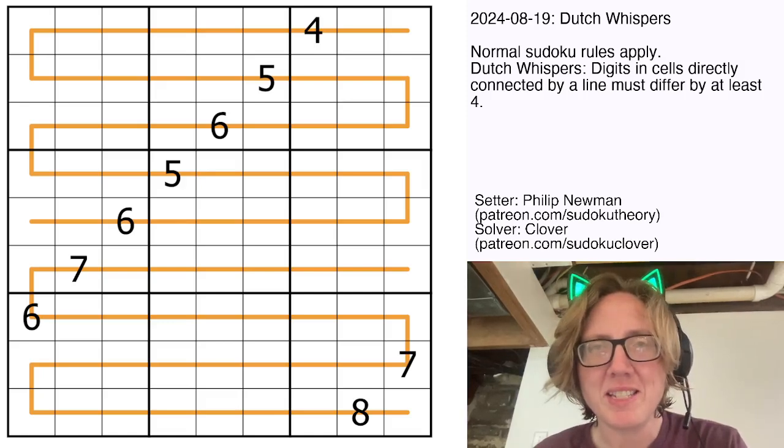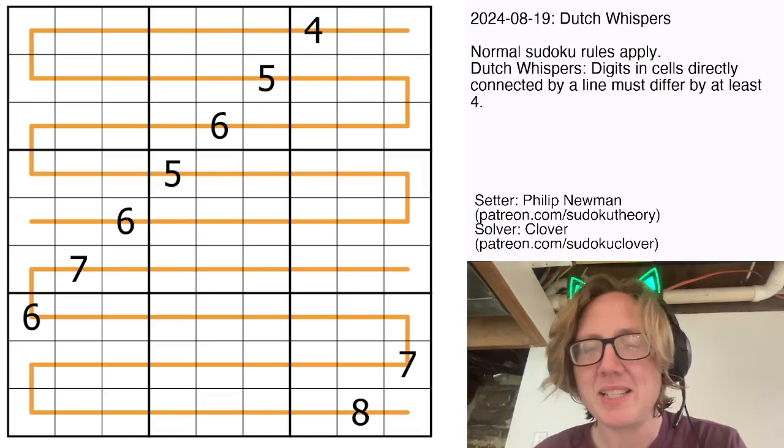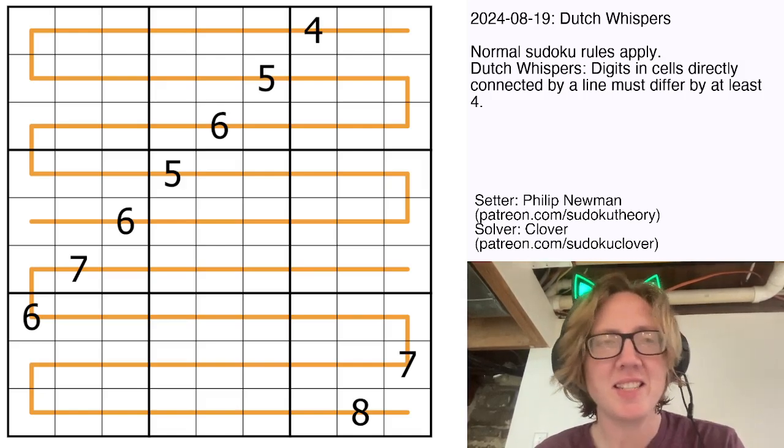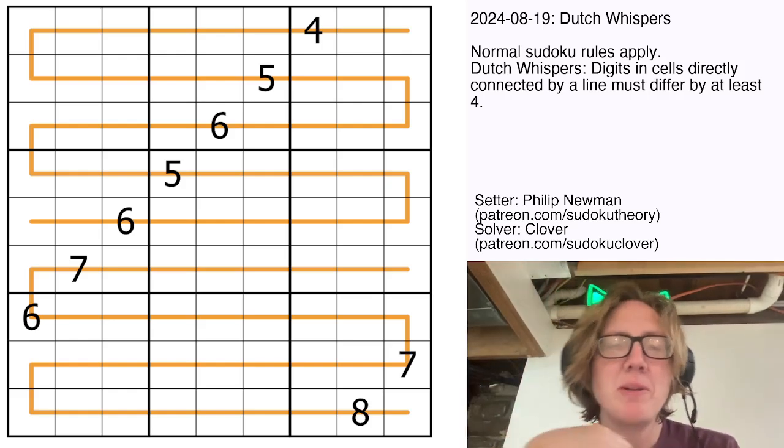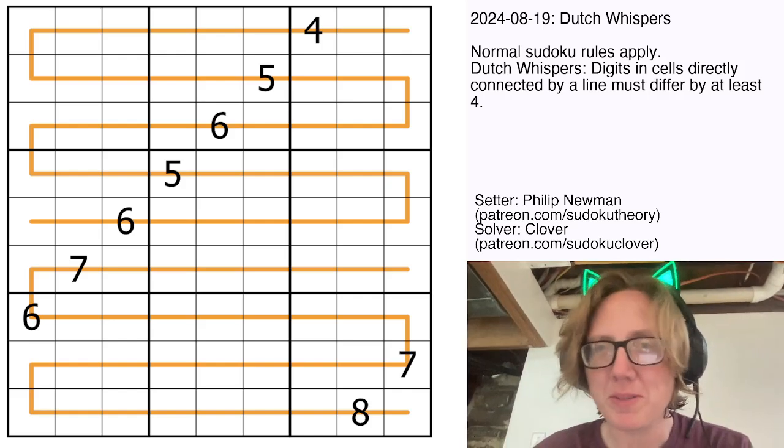Hello my friends, I'm Clover, this is The Gas Channel, and it is August 19th, 19th day of our August variant guessing game. Welcome back, and today we are solving Dutch Whispers by Philip Newman.